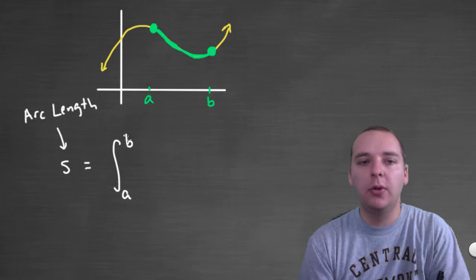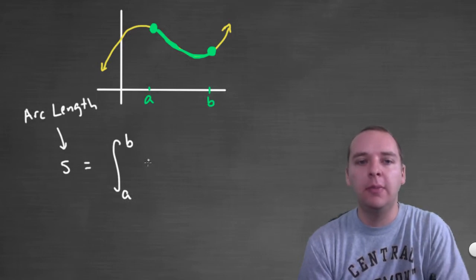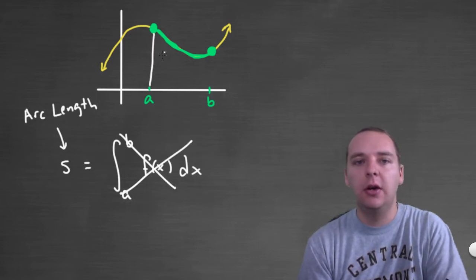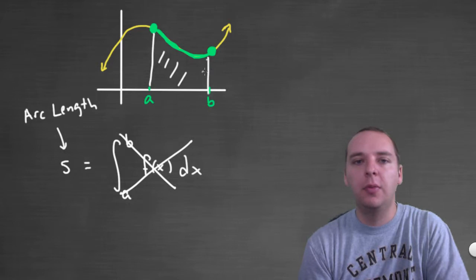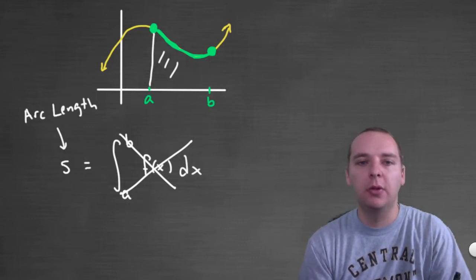So if I wrote integral from a to b of f of x dx, yeah you're right, this would not give us arc length. This would give us the area under the curve from a to b, and that's not what we're looking for.